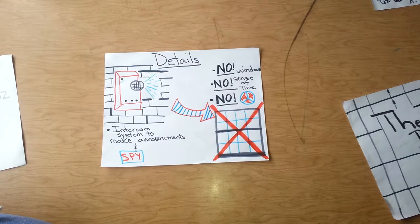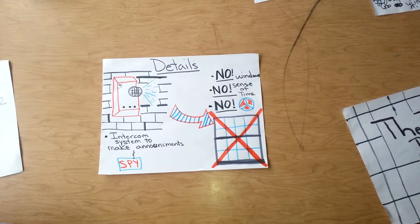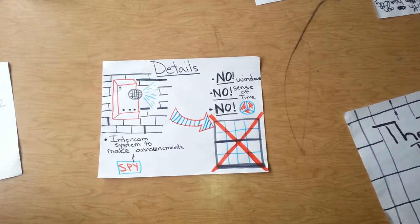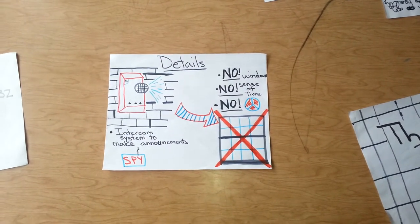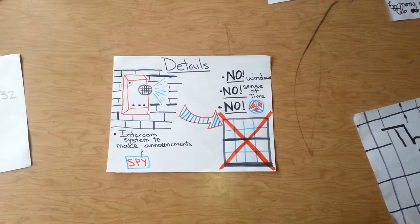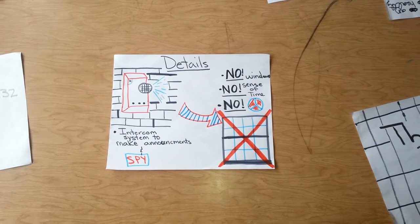There were no windows or clocks and time was distorted. All cells were monitored with an intercom system, which was used to make announcements and to spy on what the prisoners were discussing.